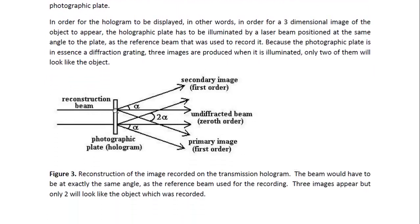Only two of them will look like the object. And so this would be the reconstruction beam which will be at the same angle as the reference beam and that part of it will go right through undiffracted. It will not be deflected in any direction but then there is a first order image on one side and a first order image on the other side. So basically it produces a diffraction pattern.